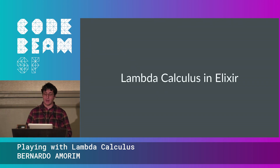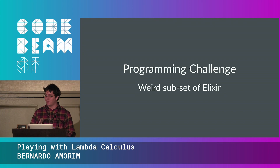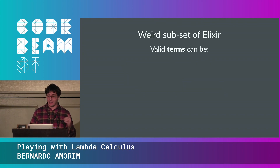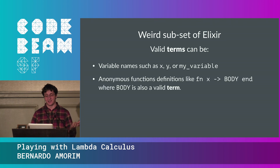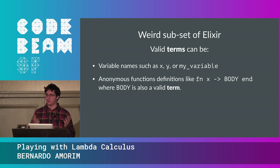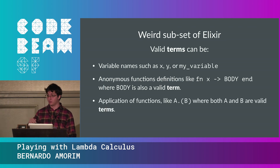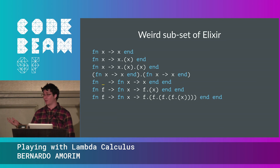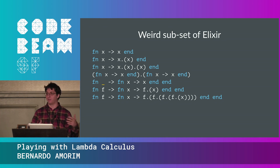Now let's play around with these ideas in Elixir. The challenge is to program Elixir using only a specific subset: variable names, anonymous functions defined with the 'fn' keyword, and function application using dot-notation with parentheses. You can write a simple function that returns its first argument, or a complex function that receives two things and applies the first one four times to itself — quite similar to the lambda calculus version.